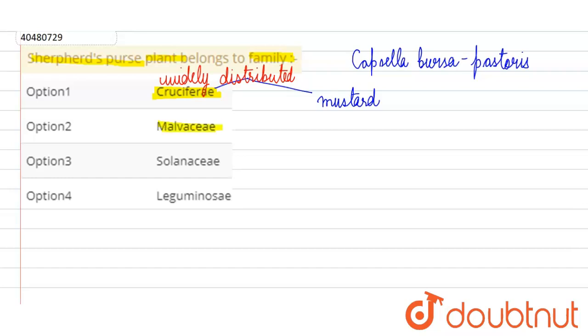Then, we have given Malvaceae. The main members of Malvaceae are cotton and okra. Okra means ladyfinger. These two members are mainly known for this family.